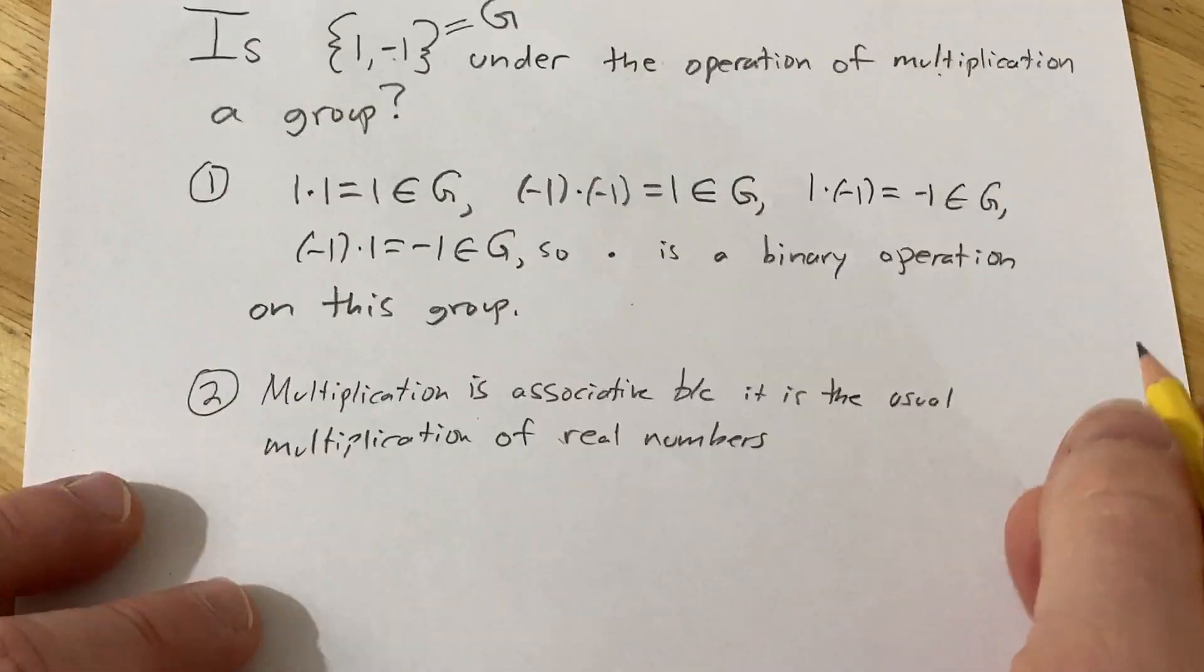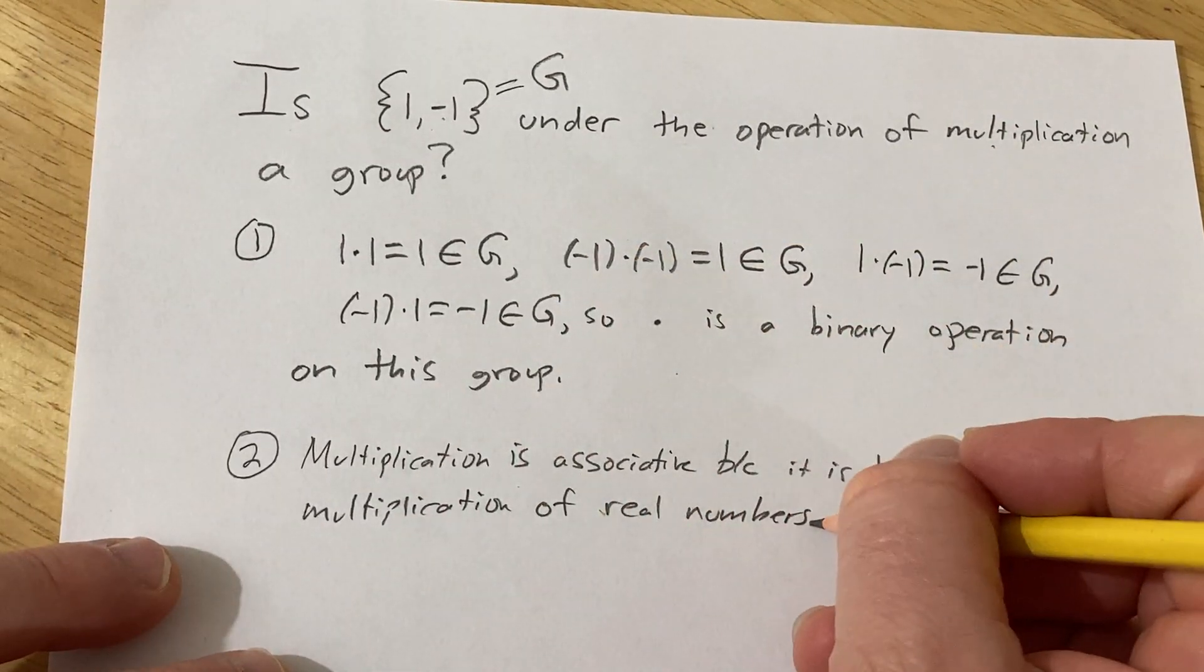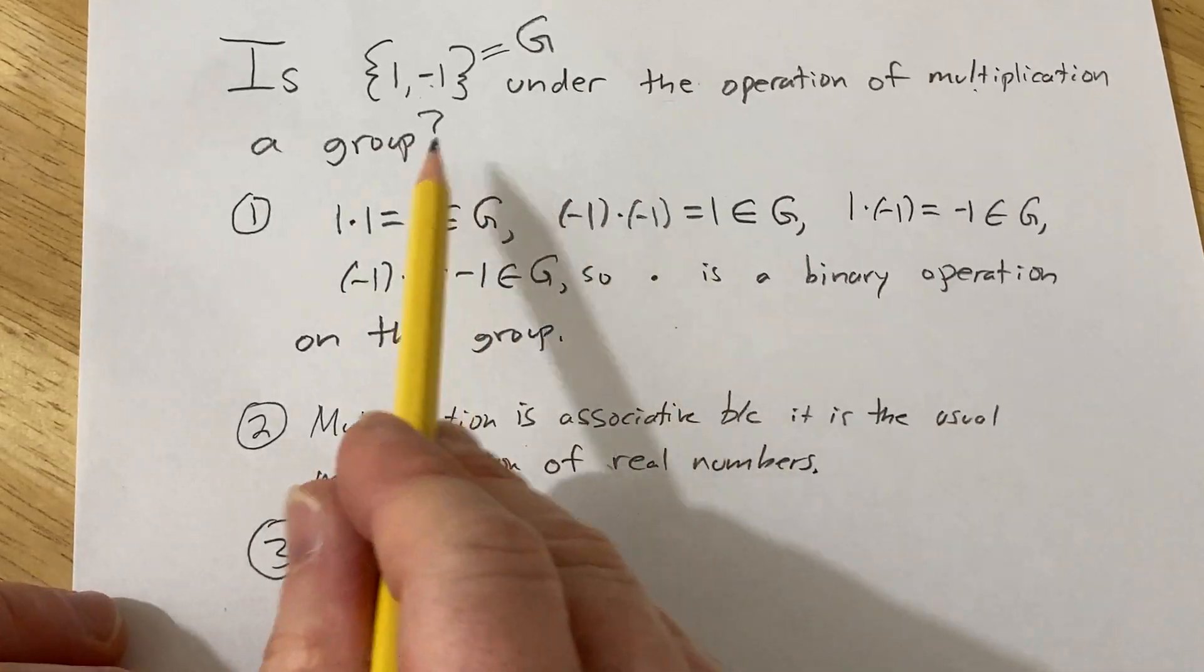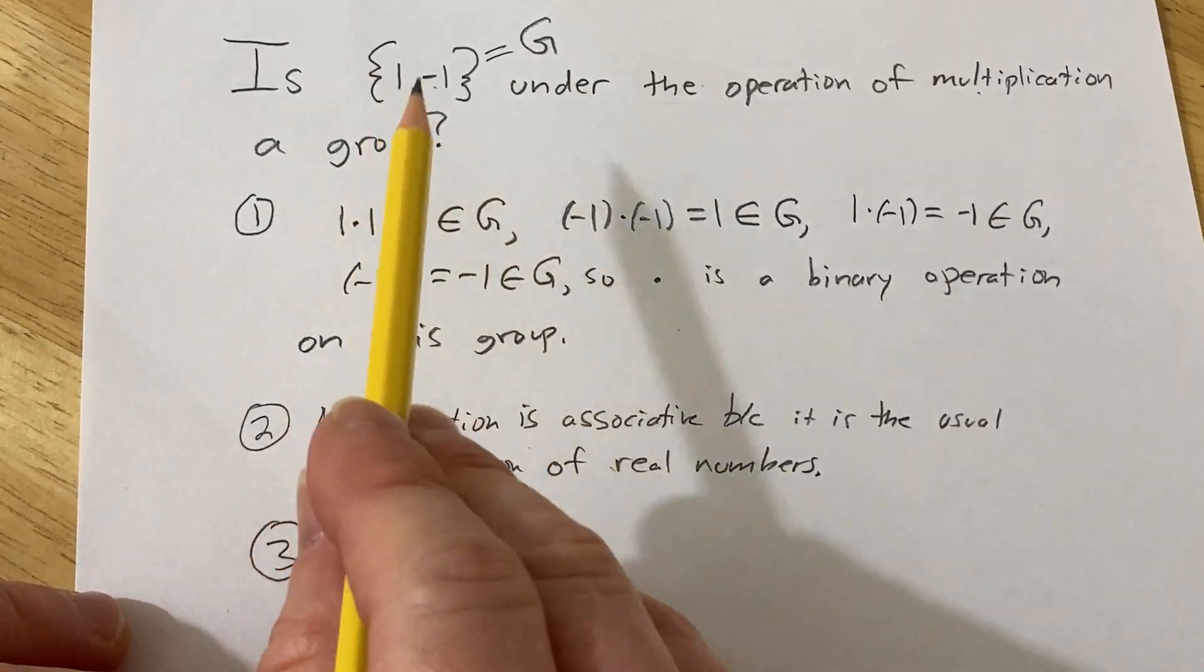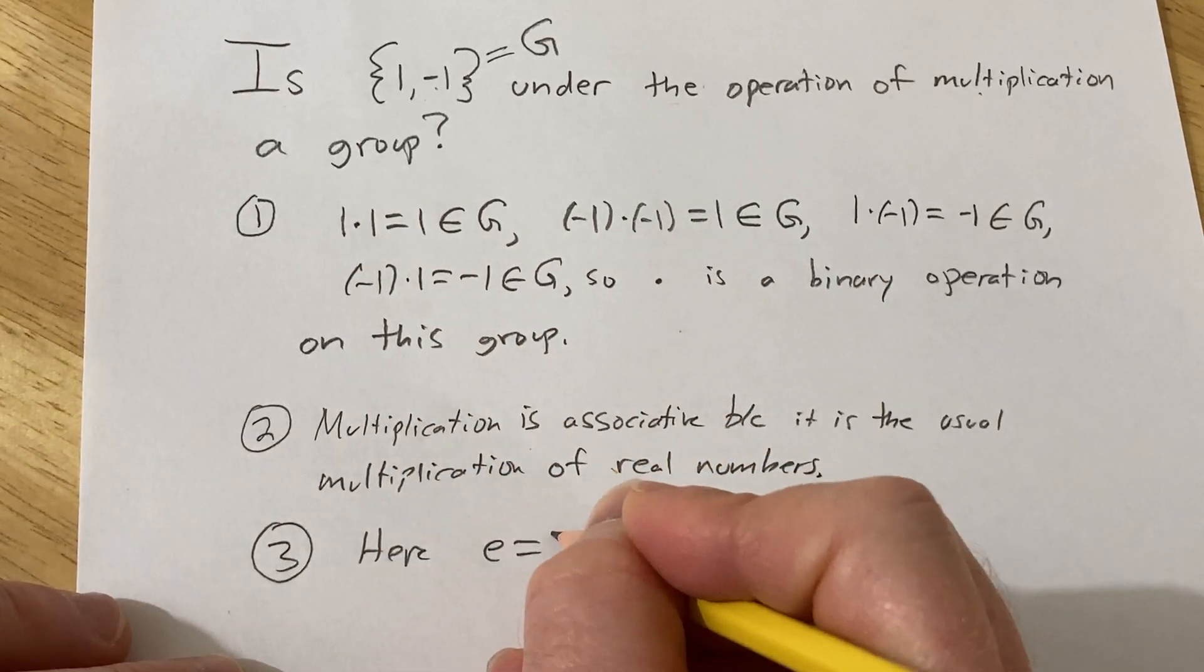which is associative, right? So the multiplication of real numbers is associative. That's all we have here, so there's no issues. Three, we need an identity element. So 1 is going to be the identity element. So here, e equals 1,